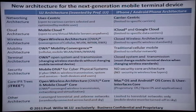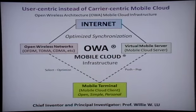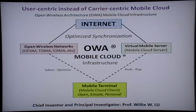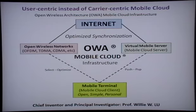Our technologies are these new architectures. The most important core issue is open wireless architecture and the mobile cloud architecture — supporting user-centric instead of carrier-centric mobile cloud, based on open wireless architecture and mobile cloud infrastructure. We have four parts: the internet as the backbone network, multiple wireless carriers supporting OFDM, TDMA, CDMA — cellular wireless networks — and also local wireless networks including wireless LAN, wireless PAN, wireless MAN, and BWA.